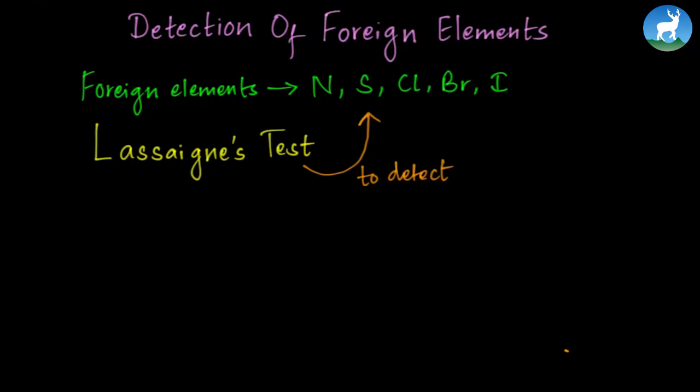In any organic compound, carbon and hydrogen are always present. But other elements may also be present, such as nitrogen, sulfur, chlorine, bromine,